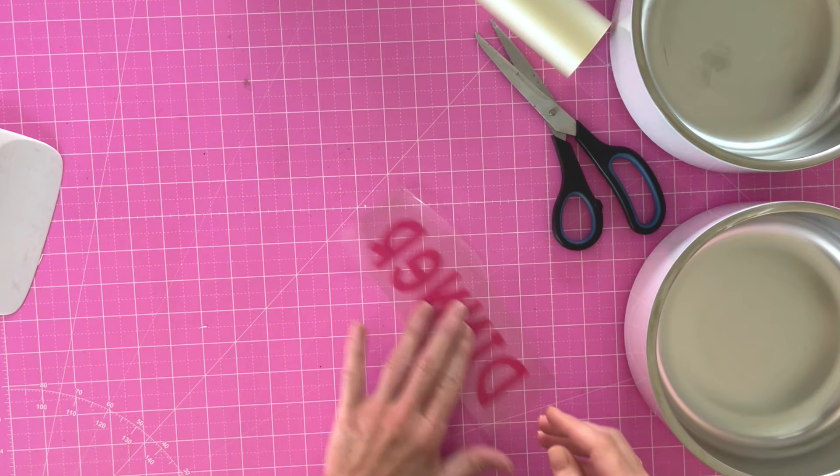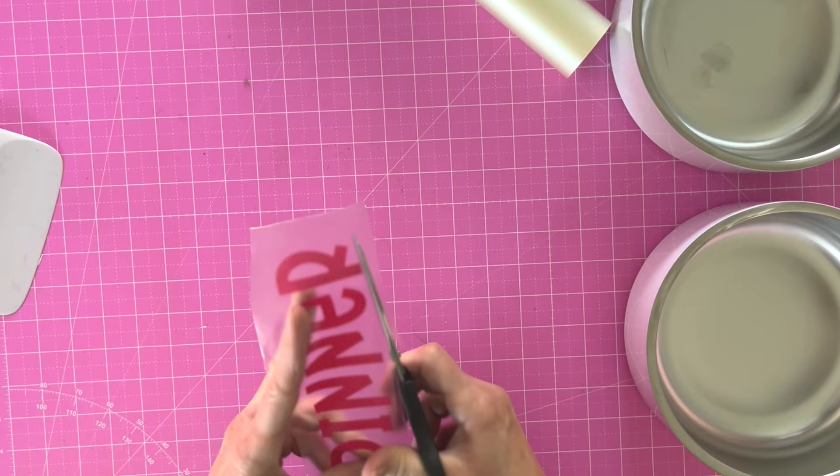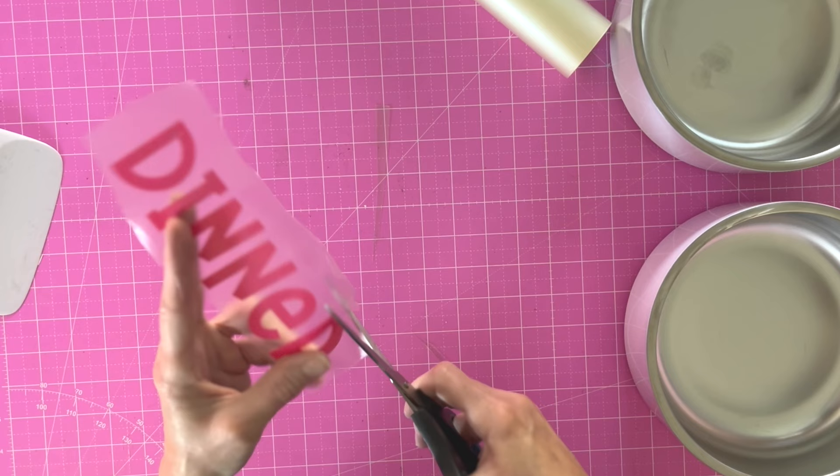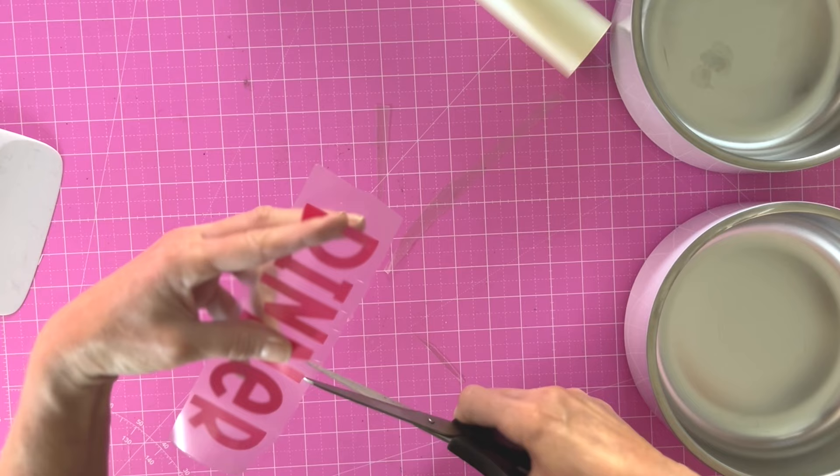So the other thing I can tell you about putting things on rounded objects is to one, don't leave a bunch of extra adhesive on the bottom and the top, and then cut some slits on the top to allow it to bend.